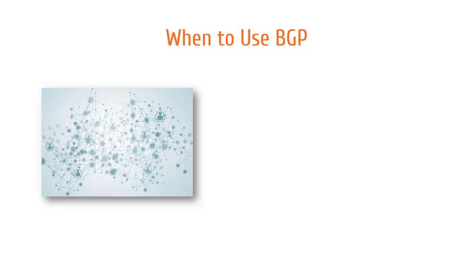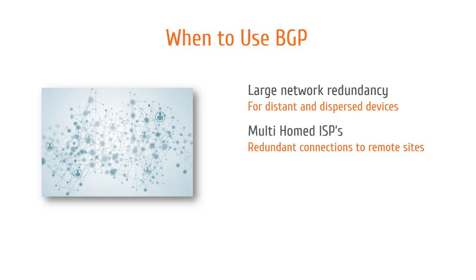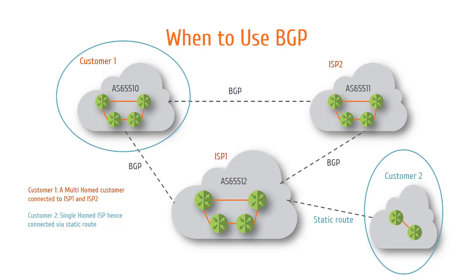Let's talk about when to use BGP. When you have a large network and need redundancy over distant devices, then we use BGP to connect. Typically, in the case of multi-homed ISPs, you need redundant connections to your remote sites using different ISPs, so if one ISP link is down you have an alternate link to connect through. In case of a smaller network with one or more remote sites, this can be implemented by just taking a default route to the ISP, and other sites can connect to the head office through the static IP address. It is best practice for a network engineer to consider how to run a network with the lowest budget and best network connectivity.